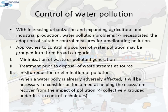Control of Water Pollution: With increasing urbanization and expanding agricultural and industrial production, water pollution problems have progressively become more serious and necessitated the adoption of suitable control measures. Approaches to controlling sources of water pollution may be grouped into three broad categories: first, minimization of waste or pollutant generation; second, treatment prior to disposal of waste streams at source; and third, in-situ reduction or elimination of pollution. When a water body is already adversely affected, it will be necessary to consider actions aimed at helping the ecosystem recover from the impact of pollution. Methods to facilitate these are collectively grouped under in-situ control techniques.